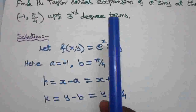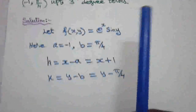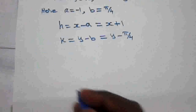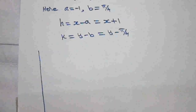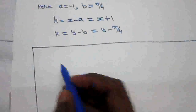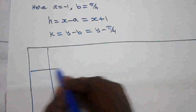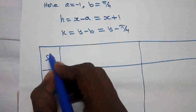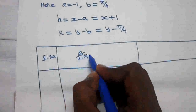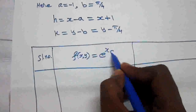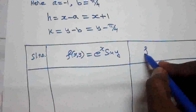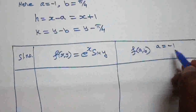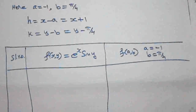The question asks for the Taylor series expansion up to 3rd degree terms. We will form a table. The given function is f(x,y) = e^x · sin(y). First, we find f(a,b) where a = −1 and b = π/4.